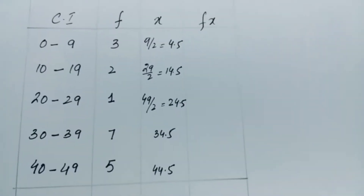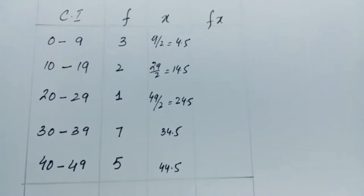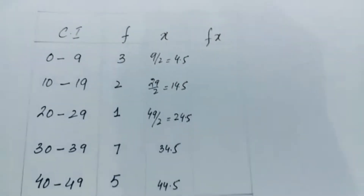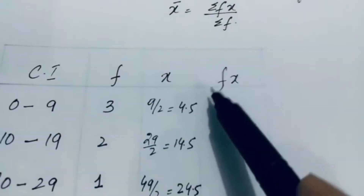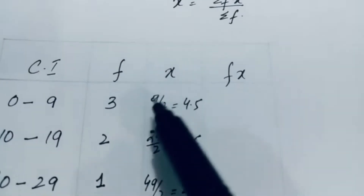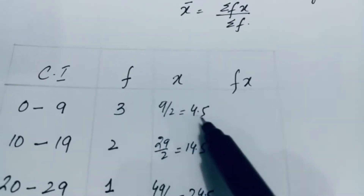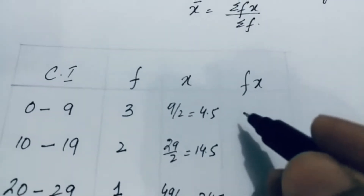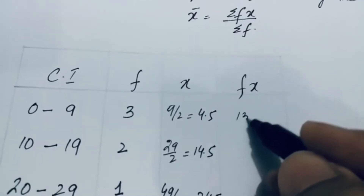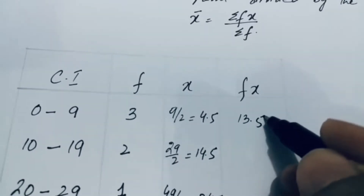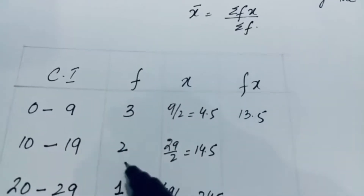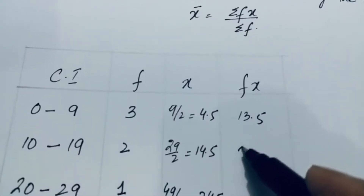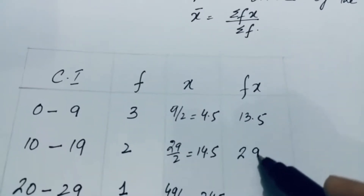These are the remaining midpoints. Now for fx: 3 multiplied by 4.5 equals 13.5, and 2 multiplied by 14.5 equals 29.